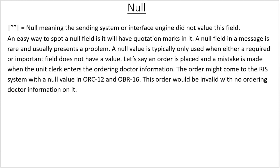Null, meaning the sending system or interface engine did not value this field. An easy way to spot a null field is it will have quotation marks in it. So this is not empty — there are quotation marks in it, which means it's null. A null field in a message is rare and usually presents a problem. A null value is typically only used when either a required or important field does not have a value. Let's say an order is placed and a mistake is made when the unit clerk enters the ordering doctor information. The order might come to the RIS system with a null value in ORC12 and OBR16. This order would be invalid with no ordering doctor information in it. So null usually is a problem.